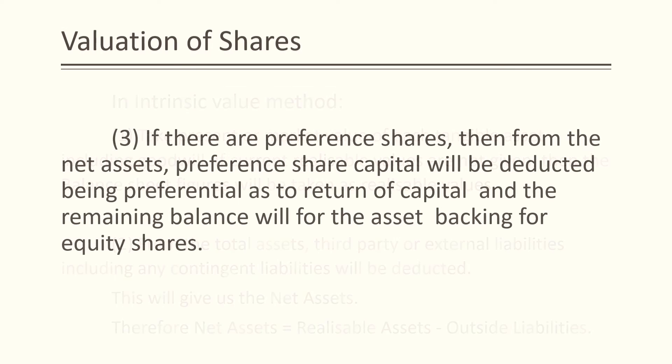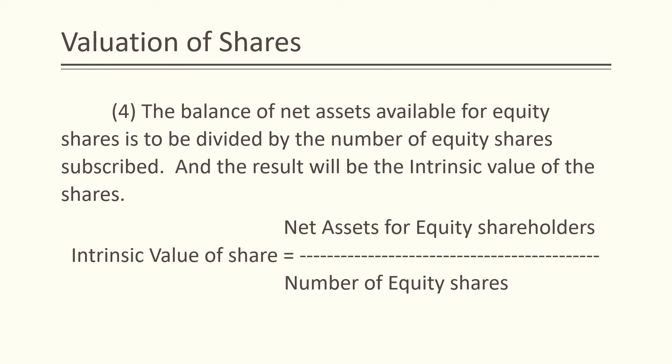Next, if there are preference shares, then from the net assets calculated in step 2, the preference share capital will be deducted, being preferential as to return of capital, and the remaining balance will represent the asset backing for equity shares. After this third step, the balance of net assets available for equity shares is to be divided by the number of equity shares subscribed. The result will be the intrinsic value of the shares. Therefore: Intrinsic Value of Shares = Net Assets Available for Equity Shareholders divided by Total Number of Equity Shares.